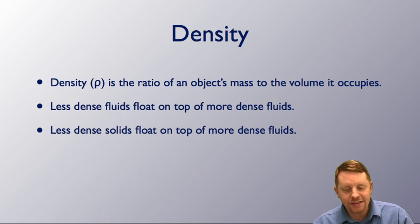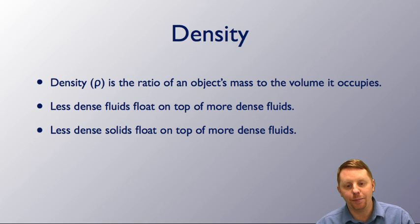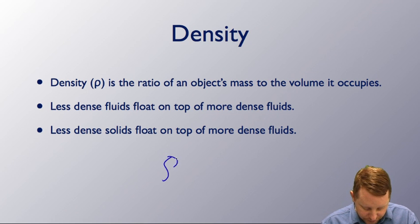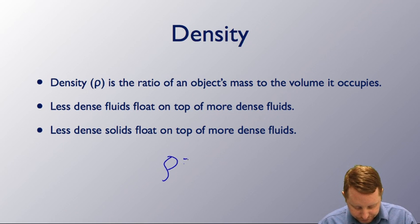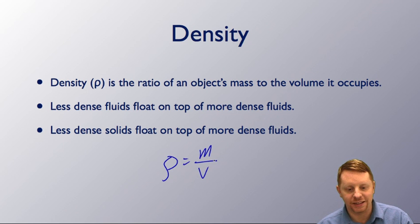Density of a fluid — well, density of anything — is the ratio of the object's mass to the volume it occupies. Less dense fluids float on top of more dense fluids, and less dense solids will float on top of more dense fluids. Density, given the symbol rho, is mass divided by volume.